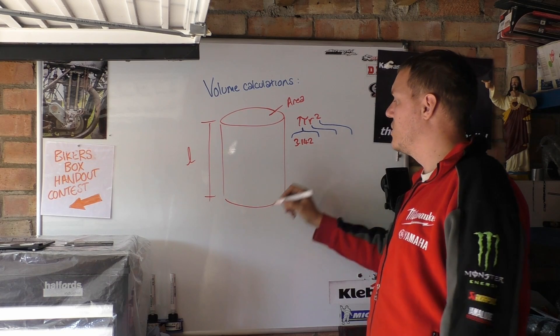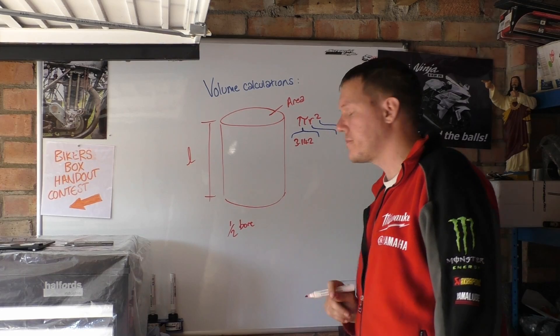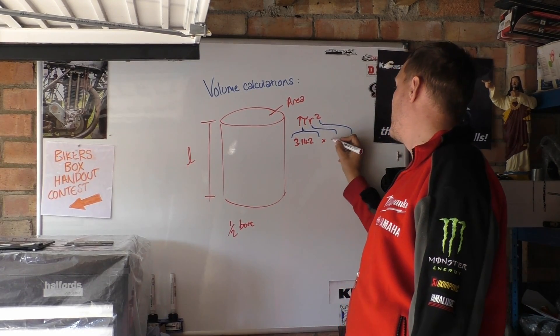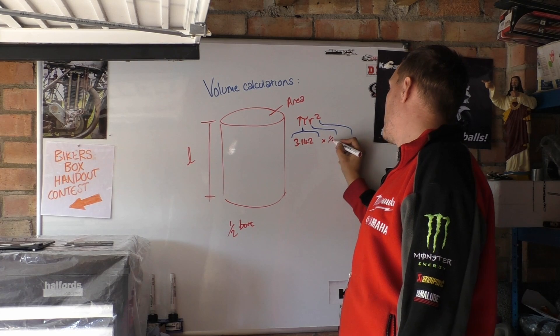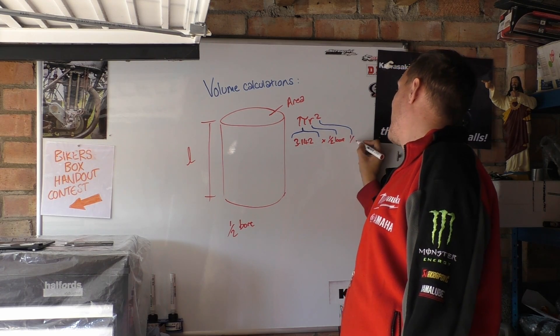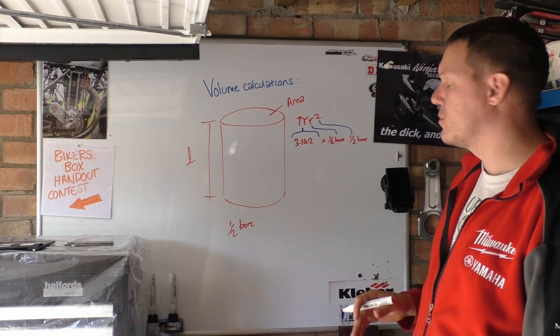Your radius is your bore or half of your bore. So that's times by your half of your bore and then it's half of your bore again, which is the square bit.